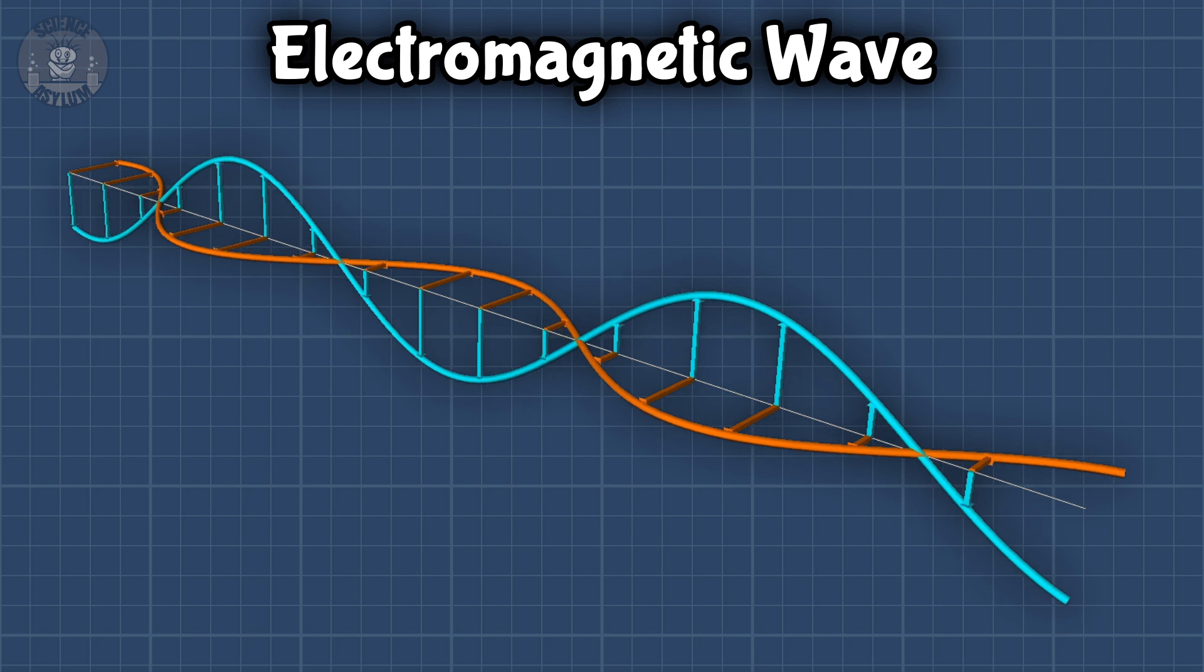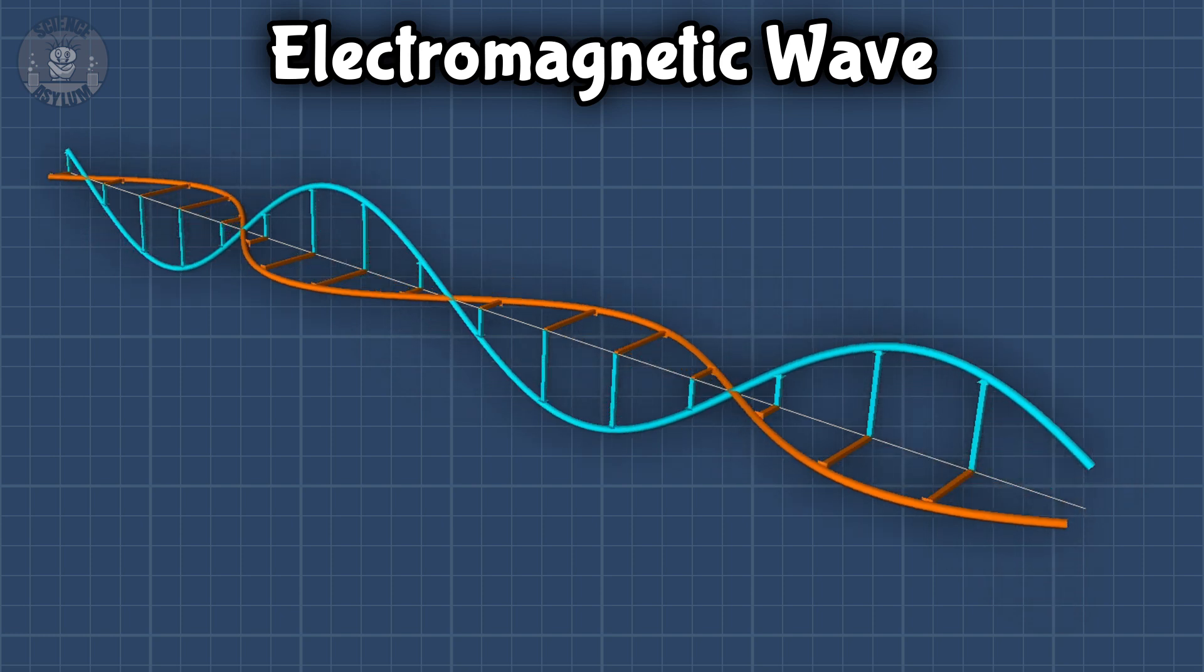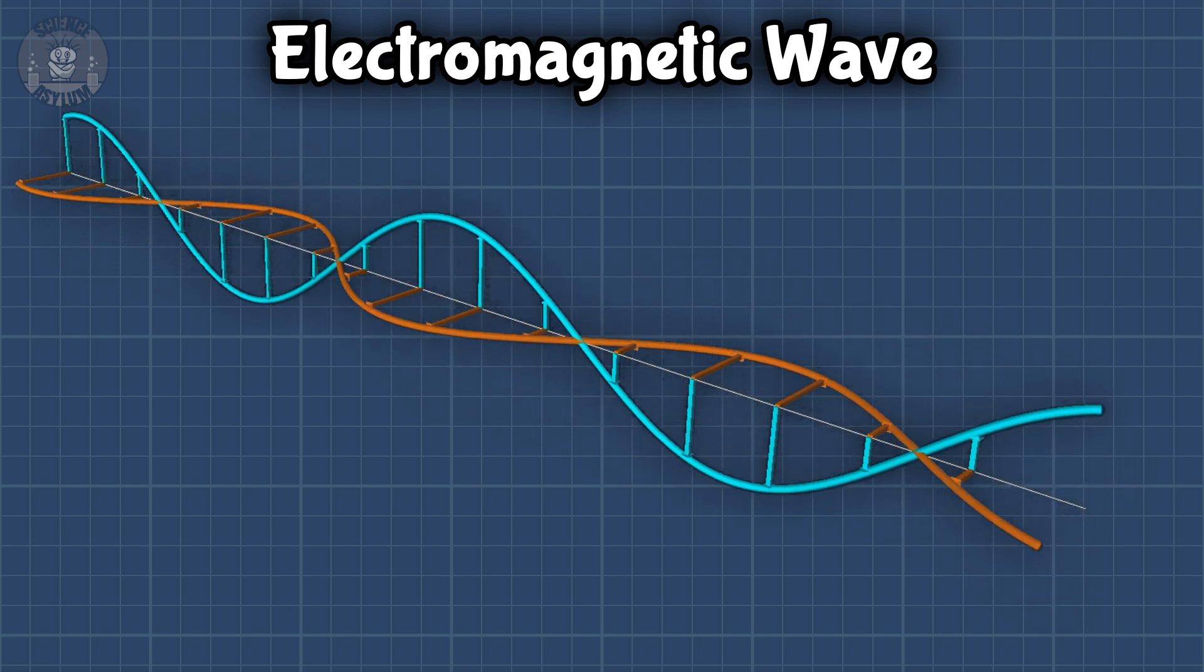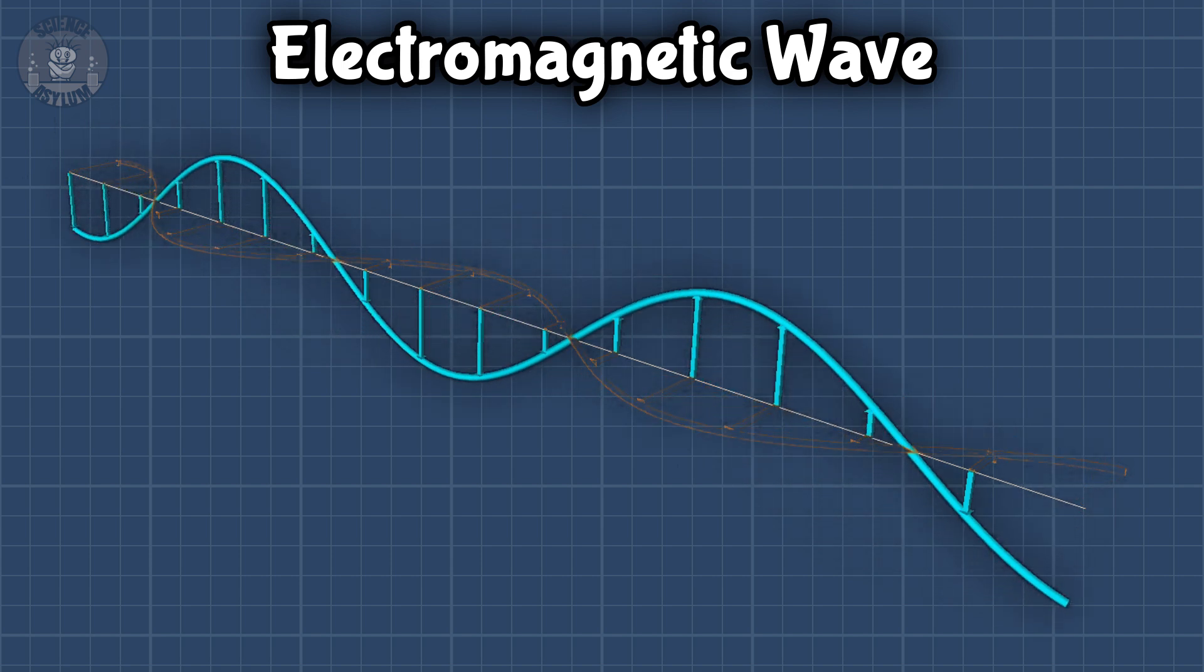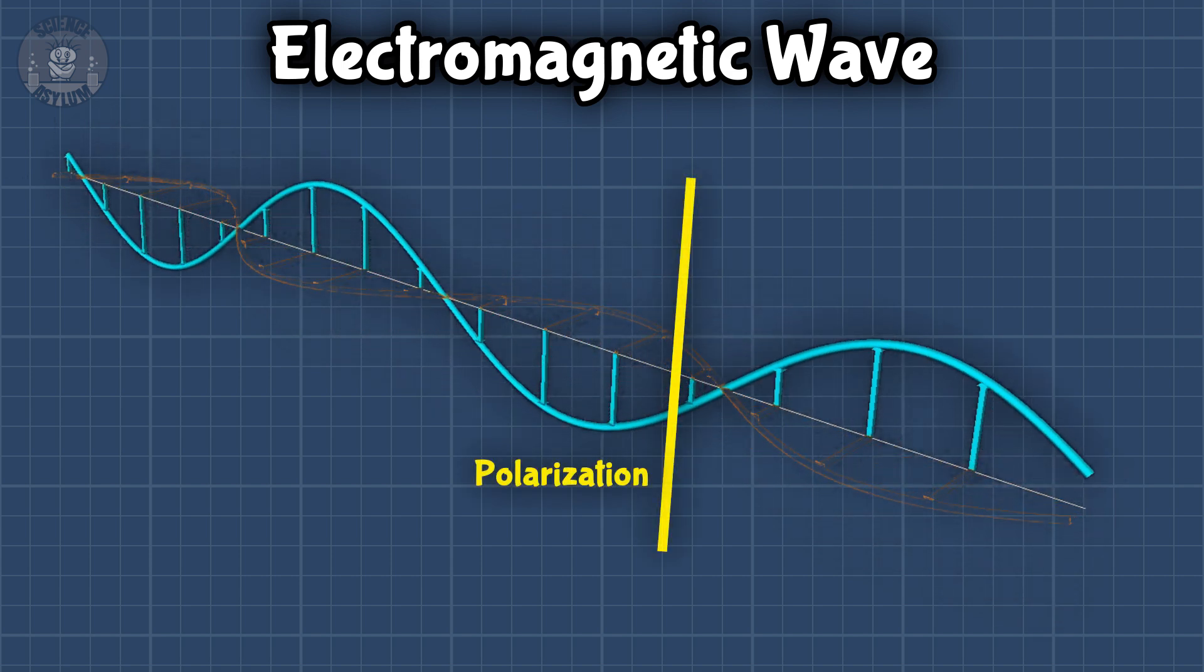To answer that, we need to review a little. Light is often shown to be an electromagnetic wave, like this. Since the electric part has more influence over things, we tend to focus more attention on that. We call that direction the wave's polarization.